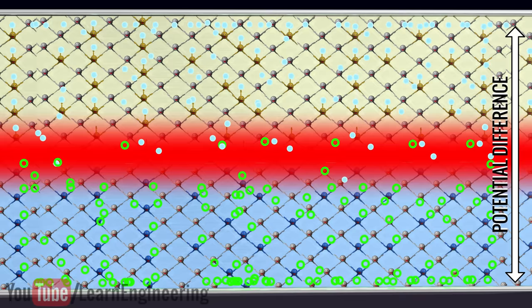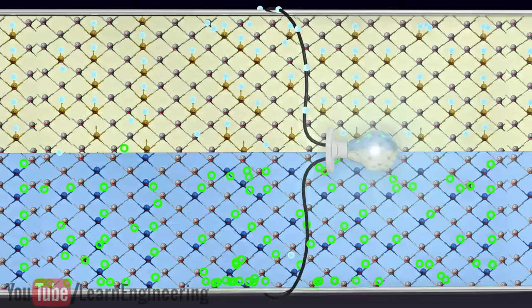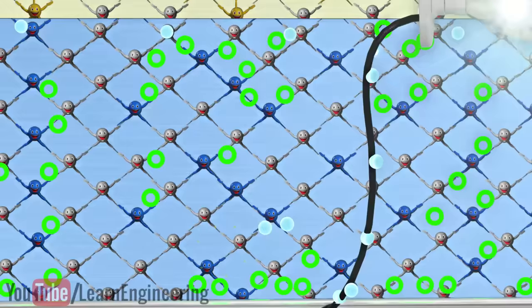As soon as we connect any load between these regions, electrons will start flowing through the load. The electrons will recombine with the holes in the P region after completing their path. In this way, a solar cell continuously gives direct current.